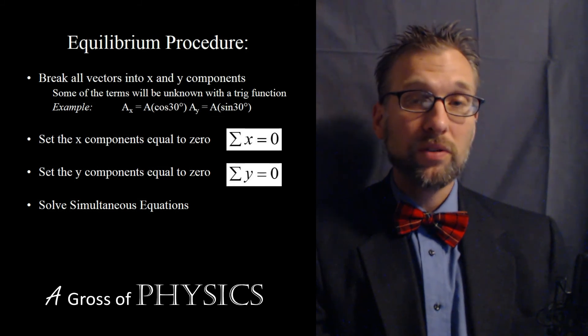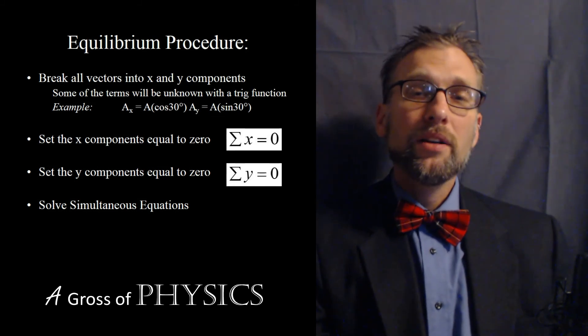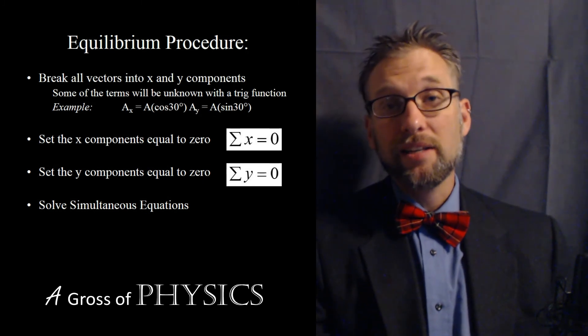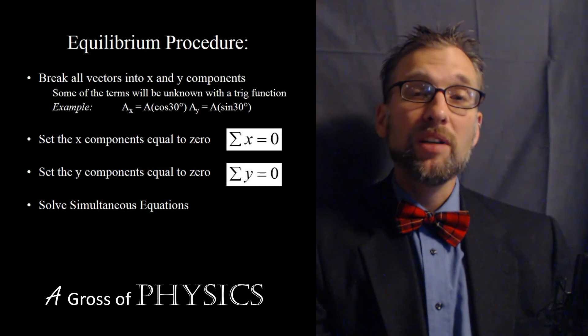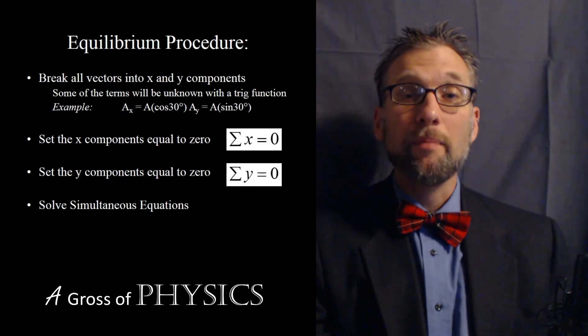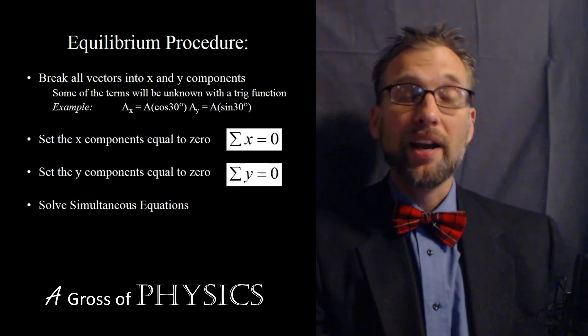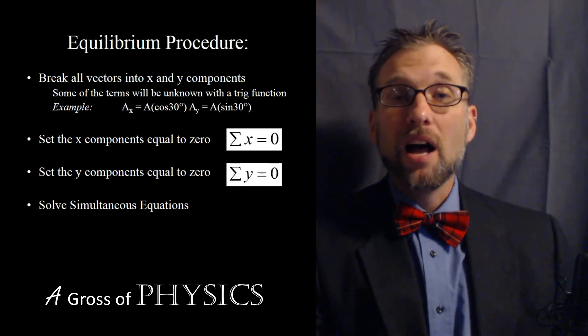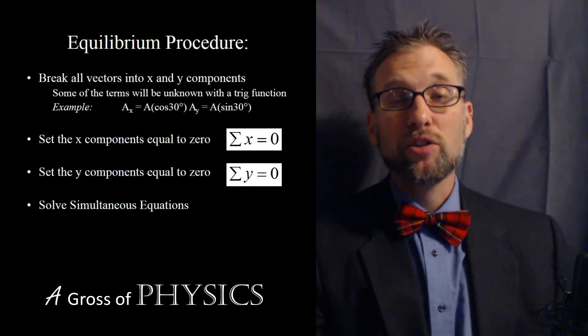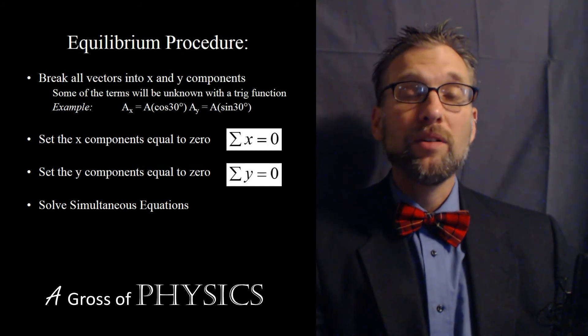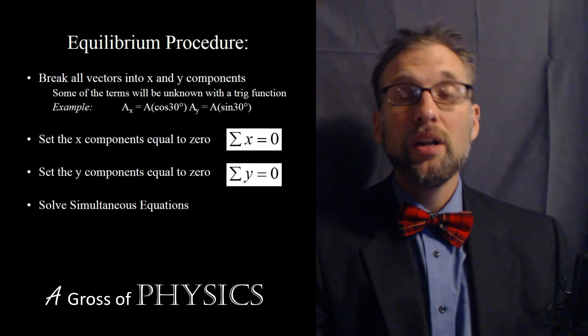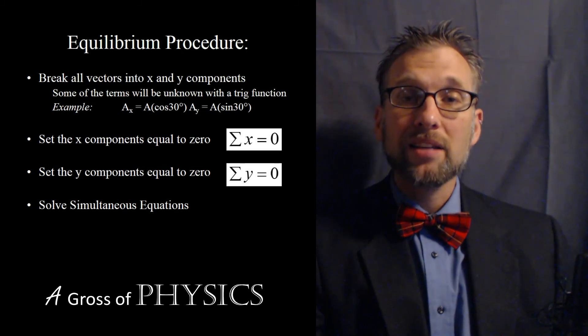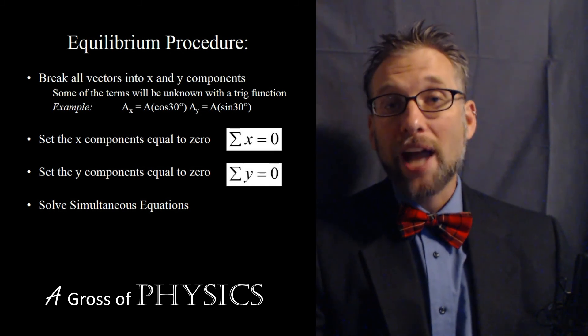And then what we would do is set all the vectors equal to zero. All the x's together equals zero. All the y's together equals zero. The symbol for add up all the x's and y's in math class is a sigma. So the sigma is a Greek letter that represents summation. We add up all the vectors in that direction. Then what you'll be able to do, depending upon the problem, is solve the two equations. Typically what you'll have is two unknowns and you'll be able to solve one equation for a certain unknown and substitute it back into the first equation.